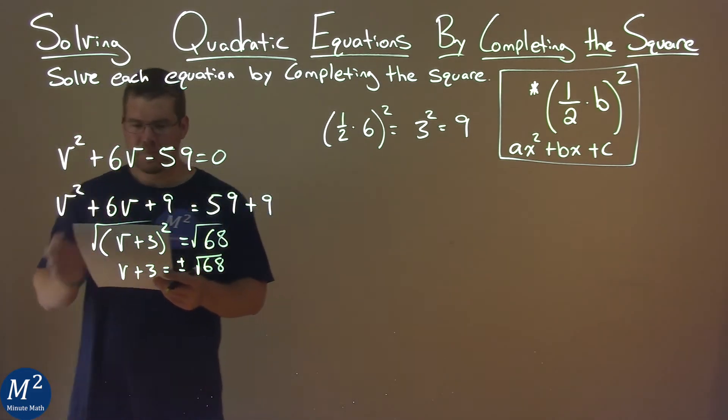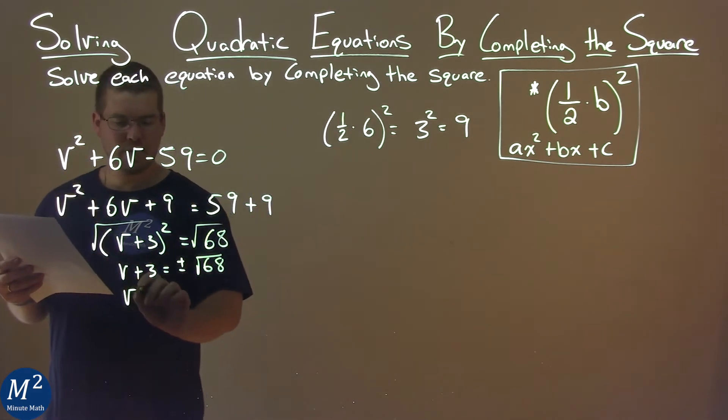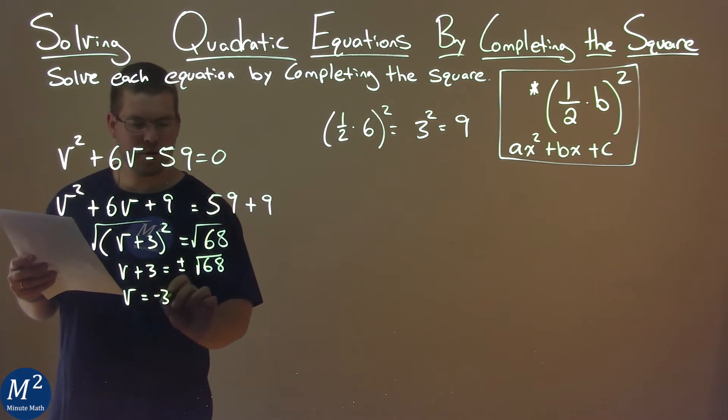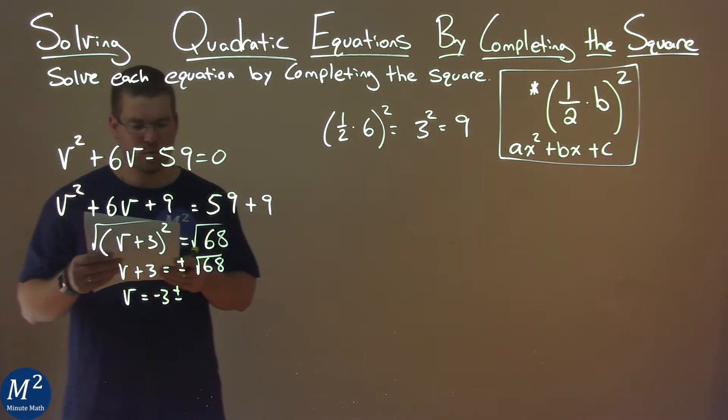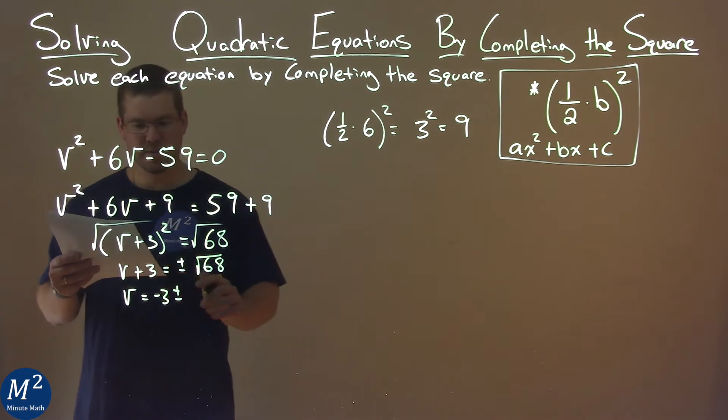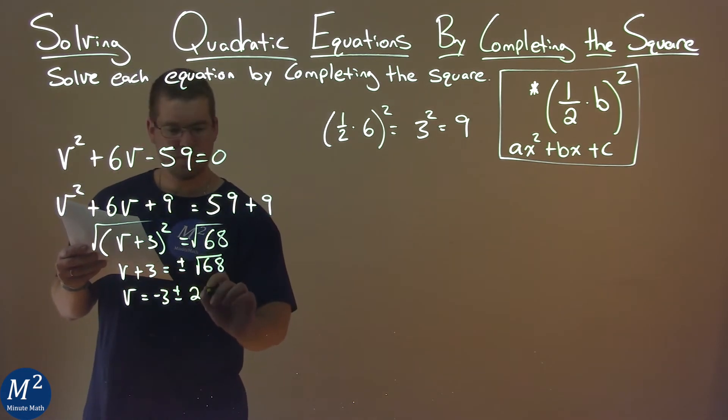We subtract 3 from both sides, so v equals negative 3 plus or minus, and the square root of 68 simplifies to 2√17.